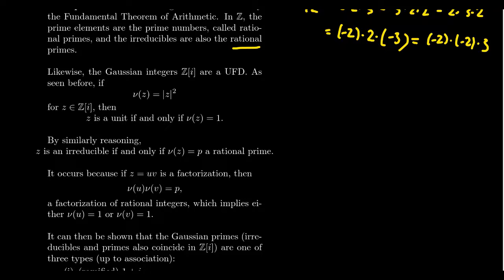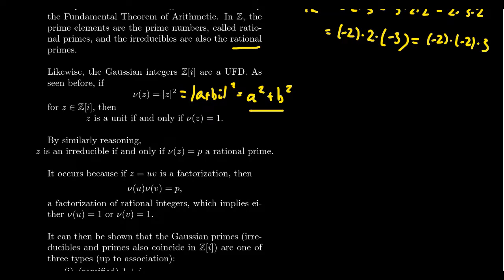Previously, when we first introduced the Gaussian integers, we proved that a number is a unit in the Gaussian integers if and only if its norm equals 1. For a Gaussian integer a + bi, the norm is a² + b². So how can a² + b² = 1? That happens if and only if a = ±1, b = 0, or b = ±1, a = 0 — giving four units: ±1 and ±i. Each of those has norm equal to 1, so we can classify all units using this norm.